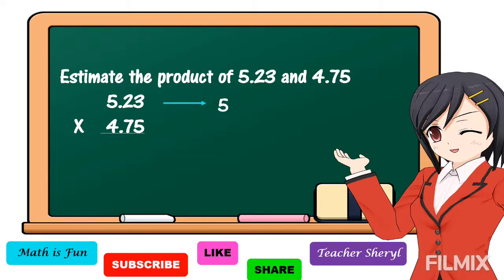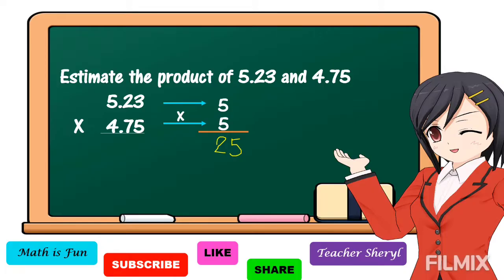How about 4 and 75 hundredths? Is this number closer to 4 or closer to 5? All right, 4 and 75 hundredths is closer to 5. Then we're going to get the product of the rounded factors: 5 times 5, the answer is 25. Therefore, the estimated product of 5 and 23 hundredths and 4 and 75 hundredths is 25.